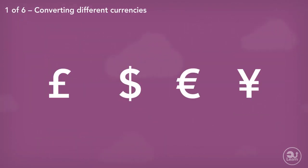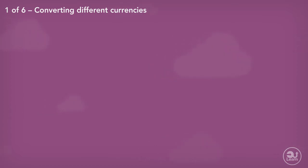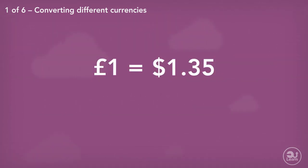When converting money or different units, we are representing an amount in a different unit of measure. We can show the comparison between two units using unit ratio notation. For example, £1 is equal to approximately $1.35. This comparison can be written in ratio notation like so: £1 to $1.35.